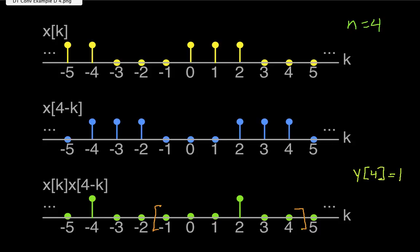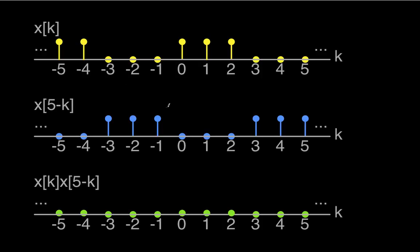And finally, when N is equal to 5, nothing non-zero overlaps. And so when N is equal to 5, Y of 5 is equal to 0.